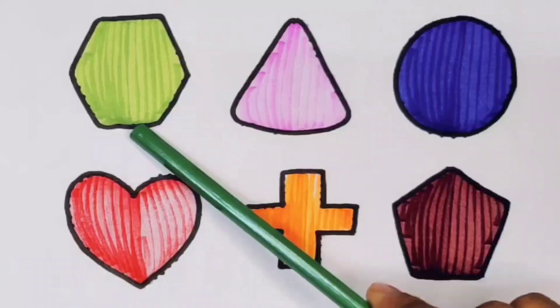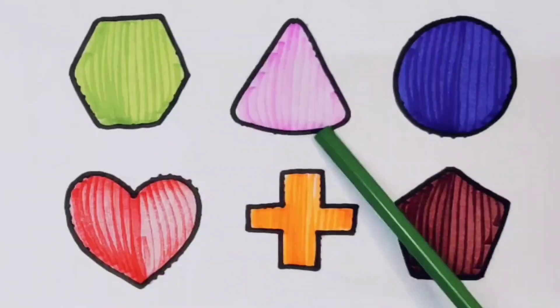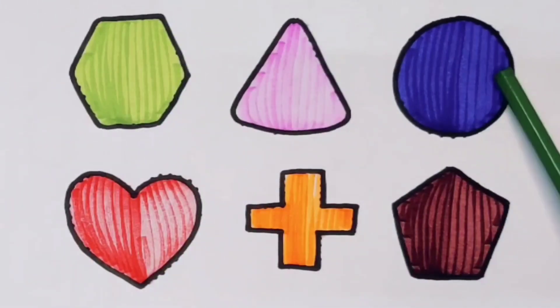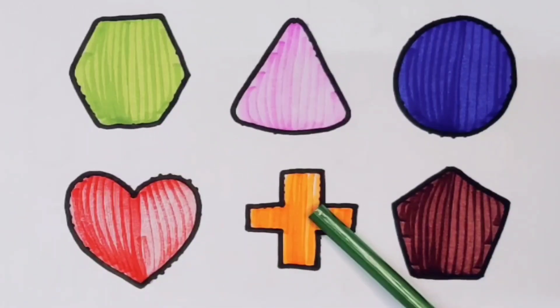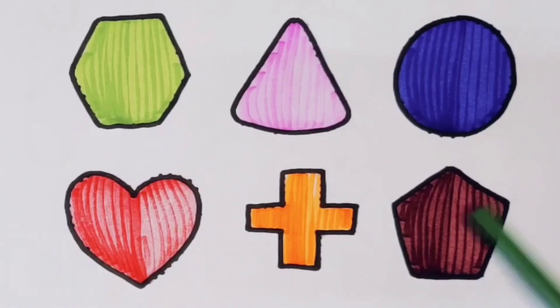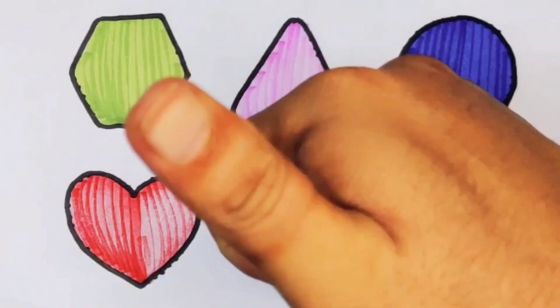We will learn green color hexagon, pink color triangle, blue color circle, red color heart, orange color cross, chocolate color pentagon.